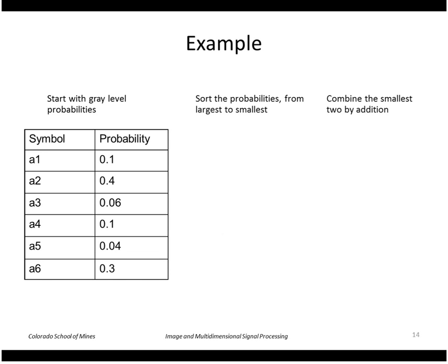So let's take this example. In this case we have six symbols with probabilities shown here. These add up to one.